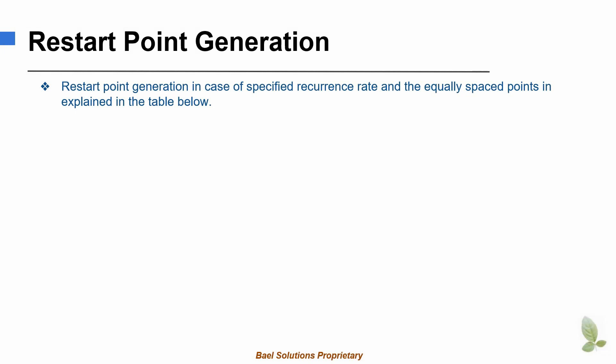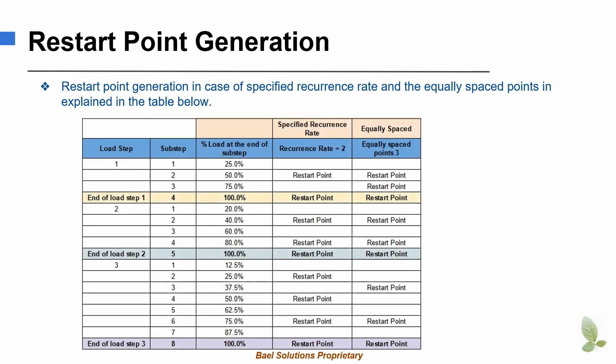An example explaining the restart point generation patterns of a specific recurrence rate and the equally spaced points is given in the table below. The table shows three load steps. The three load steps require different number of sub-steps to reach the full load application. Two cases are considered for each load step.